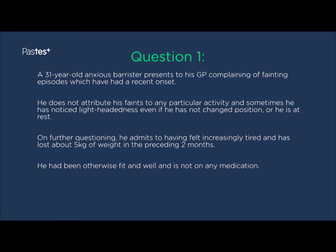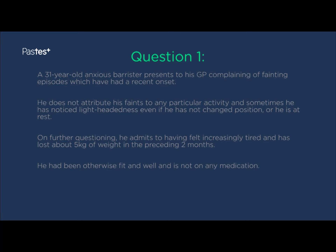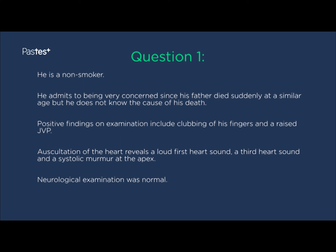We start with question one. A 31-year-old anxious barrister presents to his GP complaining of fainting episodes which have had a recent onset. He does not attribute his faints to any particular activity, and sometimes he has noticed lightheadedness even if he has not changed position or at rest. On further questioning, he admits to having felt increasingly tired and has lost about 5kg of weight in the preceding two months. He has been otherwise fit and well and is not on any medications. He is a non-smoker. He admits to being very concerned since his father died suddenly at a similar age and he does not know the cause of his father's death.